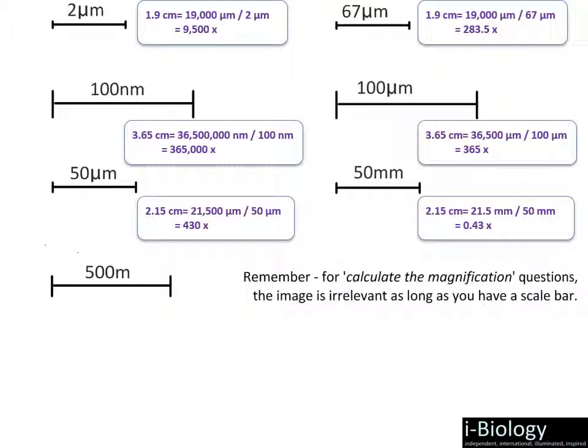So it's actually a magnification smaller than one — meaning we're looking at something where the image is smaller than the actual size. The diagram is showing something that's smaller than what it is in real life, rather than bigger. The last example uses meters: if we have 3.05 centimeters, we convert to 0.305 meters and divide by 500 meters, giving 6.1 × 10⁻⁵ X. This very small magnification means the image is tiny compared to what the object would be in real life.